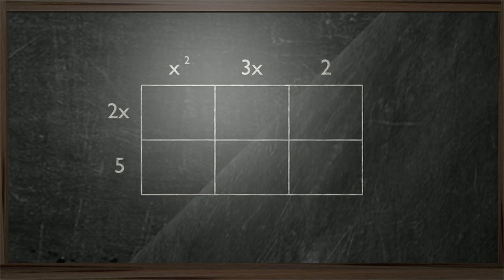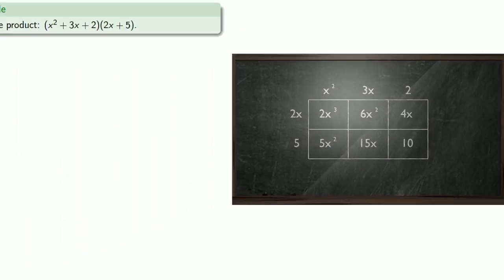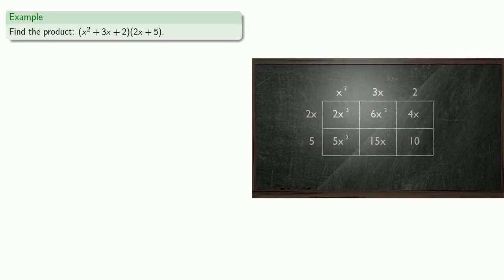So I'll get 2x cubed, 5x squared, 6x squared, 15x, 4x, and 10. And if we add up all of these areas, we find the area of the rectangle, and so we find the value of the product. So we'll add up our areas 2x cubed, 5x squared, 6x squared, 15x, 4x, and 10, and collect our like terms to get our final answer.